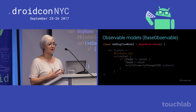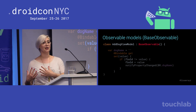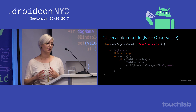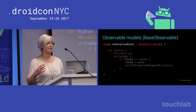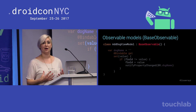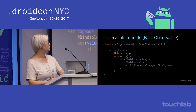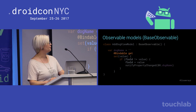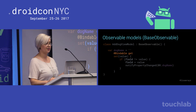Observable view models, in my opinion, are the real prize here. What I usually do is have an observable view model that extends BaseObservable. Observable is the interface, and BaseObservable is an abstract implementation which does some work for you of registering properties and providing methods to notify changes.